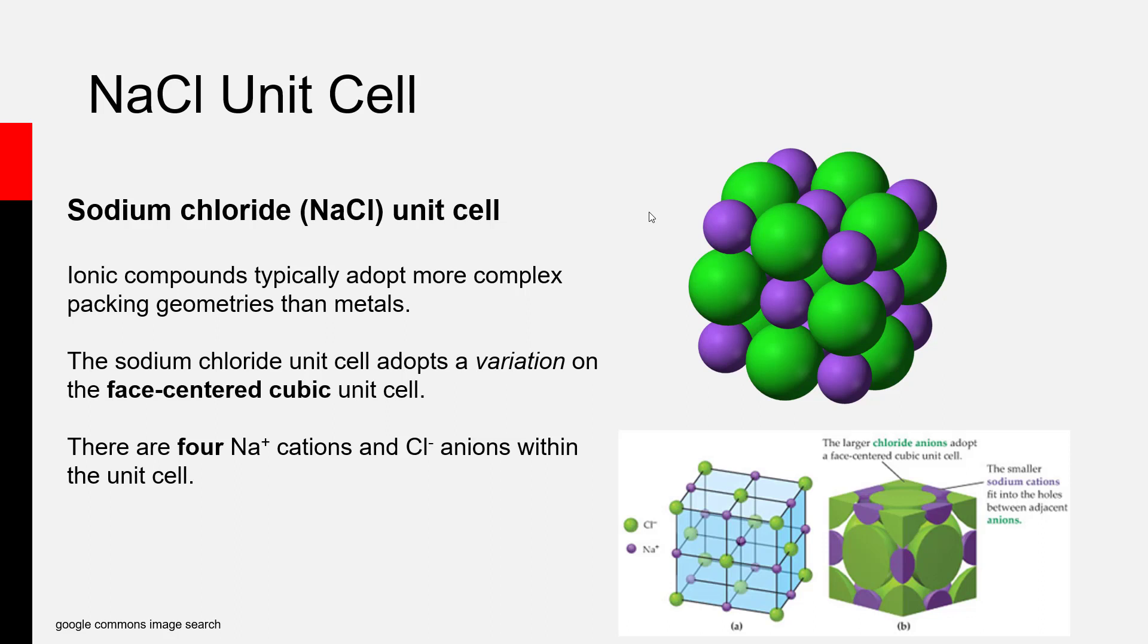In an ionic compound's unit cell, you have a balance both in terms of the packing of the size of the ions and how the like charges repel each other while opposite charges attract. The way these forces balance out gives us a sodium chloride unit cell where each sodium cation is surrounded by six near-neighbor chloride anions oriented octahedrally around the sodium cation, and the opposite is true from the perspective of chloride.